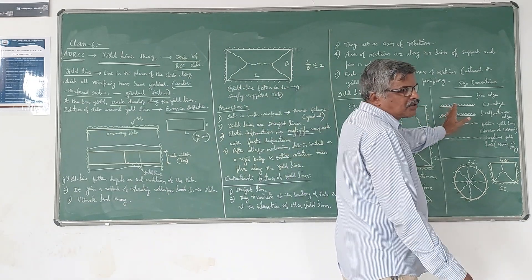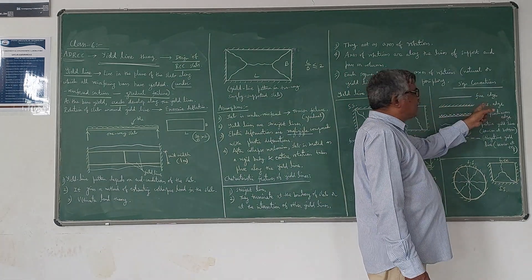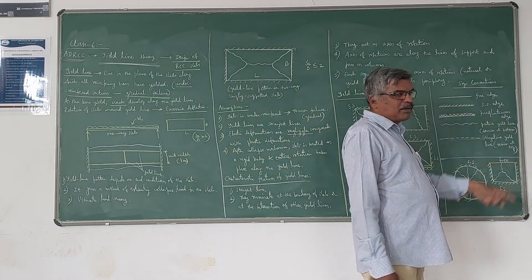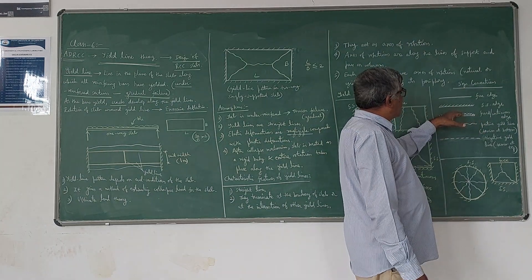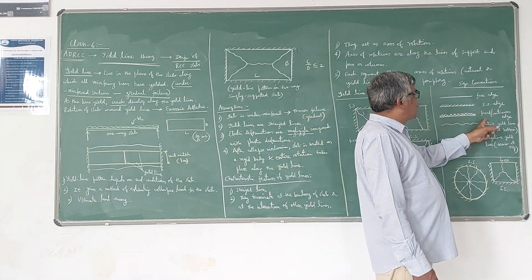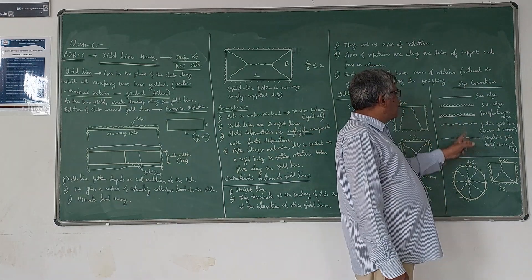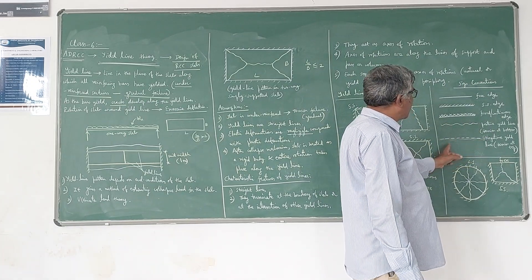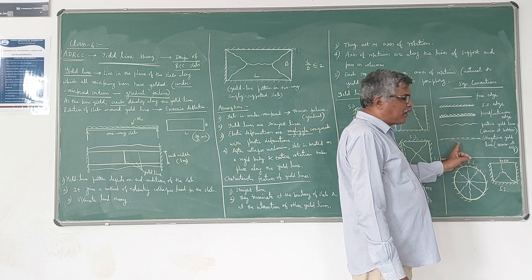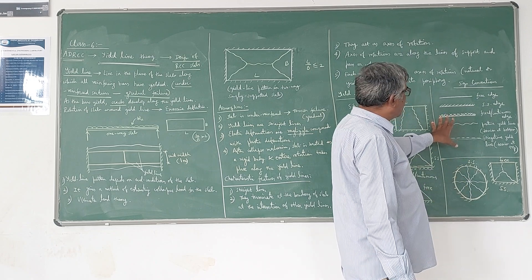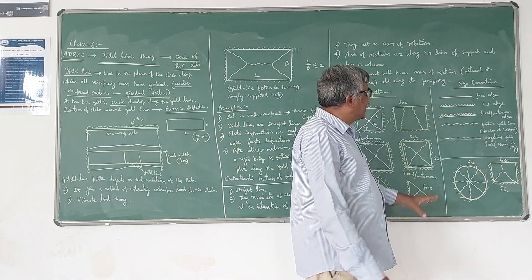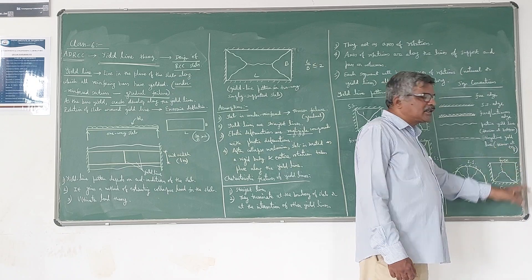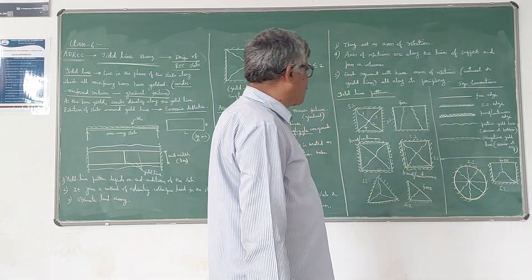There are some sign conventions used in yield line theory. A single hatch line represents a simply supported edge. A double hatch line represents a fixed or continuous edge. A free edge is shown as a plain line. A positive yield line is represented by a solid line, and a negative yield line is represented by a dotted line. A positive yield line means tension exists at the bottom of the slab; a negative yield line means tension exists at the top of the slab.